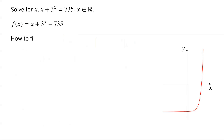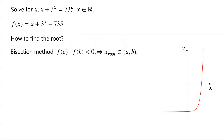Then how to find the root? We can use the bisection method to find the root. If there exist two points a and b, such that the product of f of a and f of b is less than 0, then the root must be in the interval (a, b). Iteratively narrow down the interval by halving it.